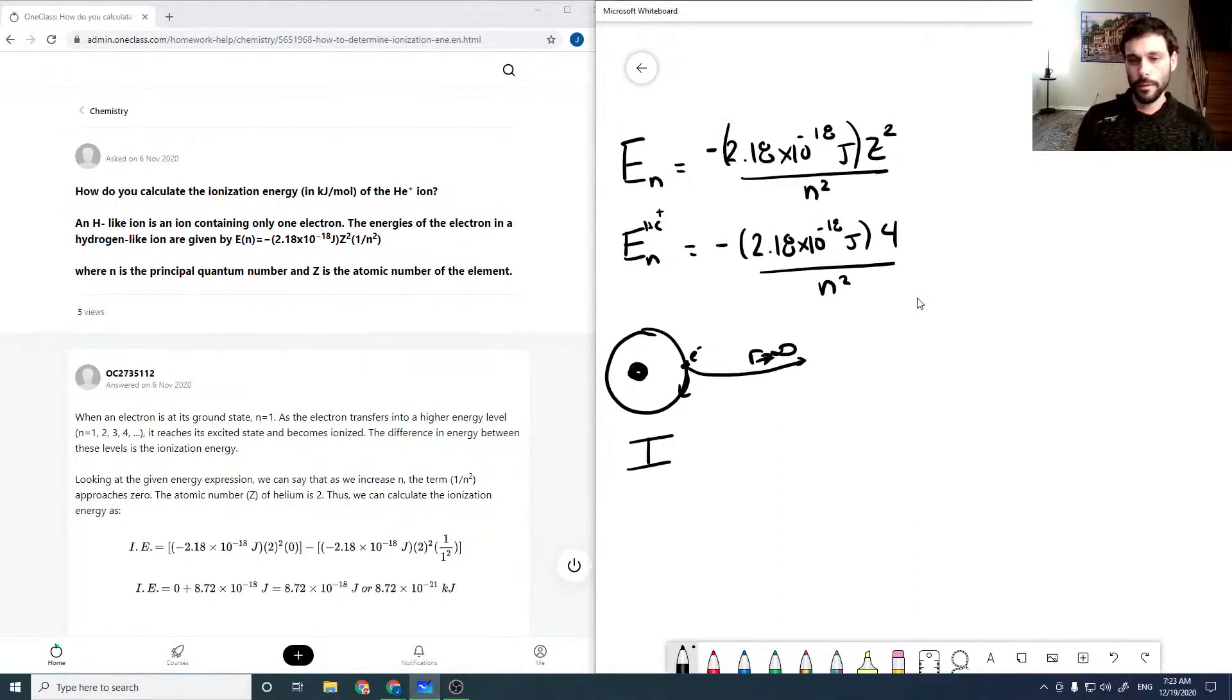Put another way, in equation form, ionization energy is just the energy at infinity minus our n-state energy. We set this energy to zero, which makes sense because these energies are all negative, and so then it's just minus the energy of the state.